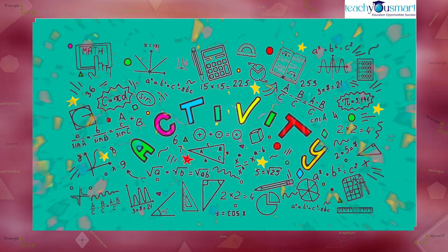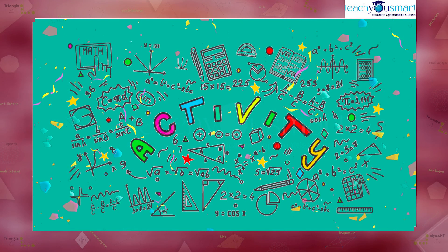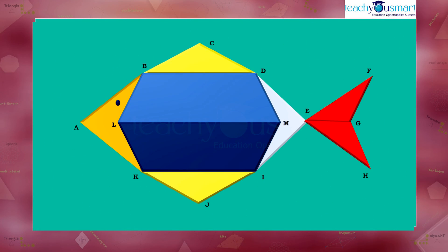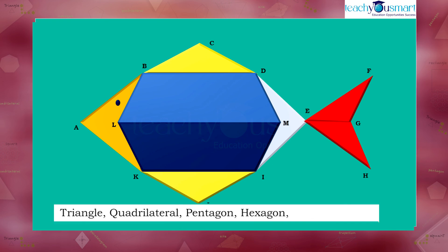Before winding up today's session, I will give you an activity: identify the following from the figure. First, triangle, quadrilateral, pentagon, hexagon, heptagon, etc. Second, convex, concave, regular, and irregular polygons.